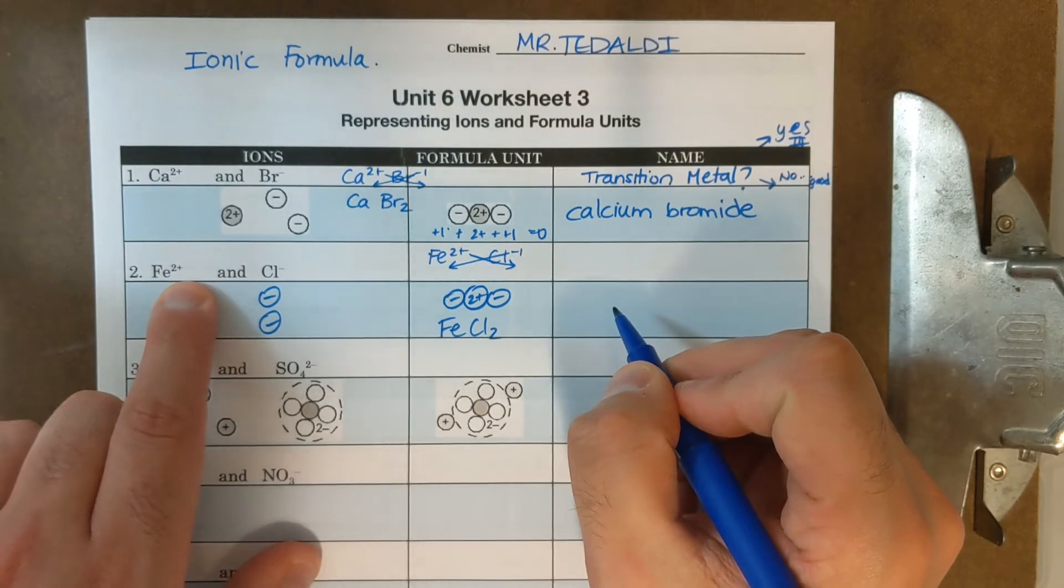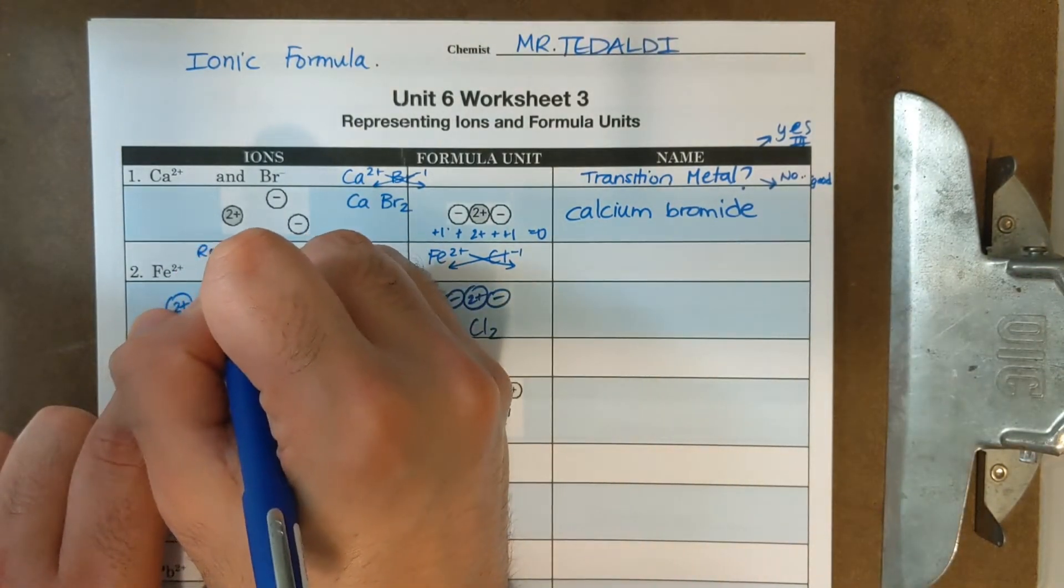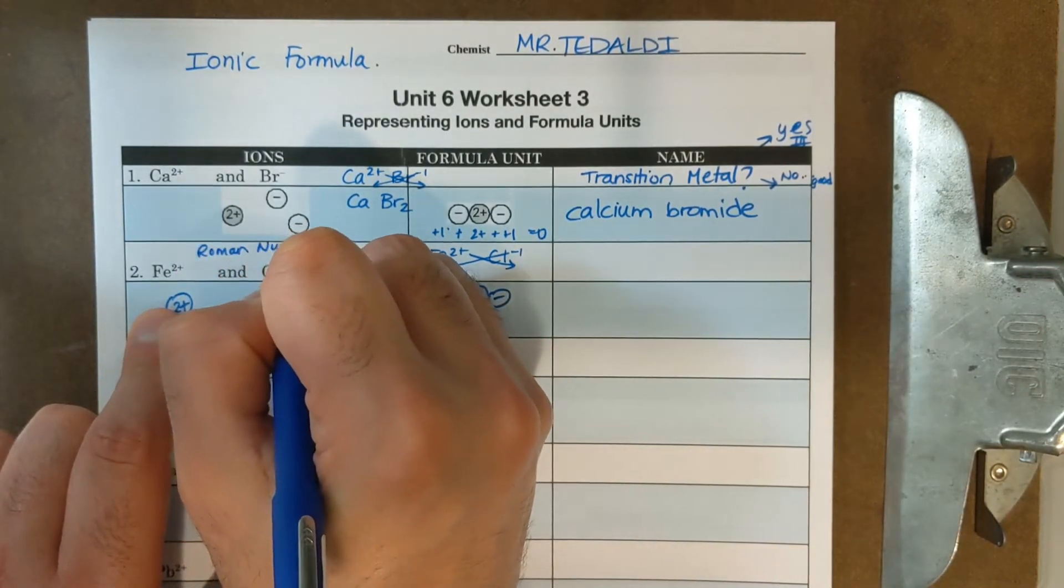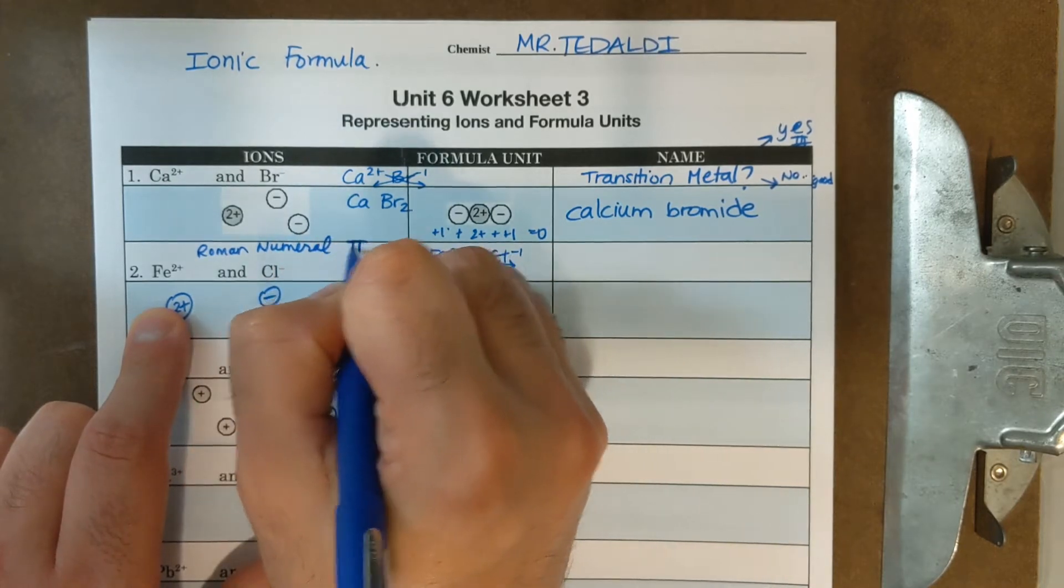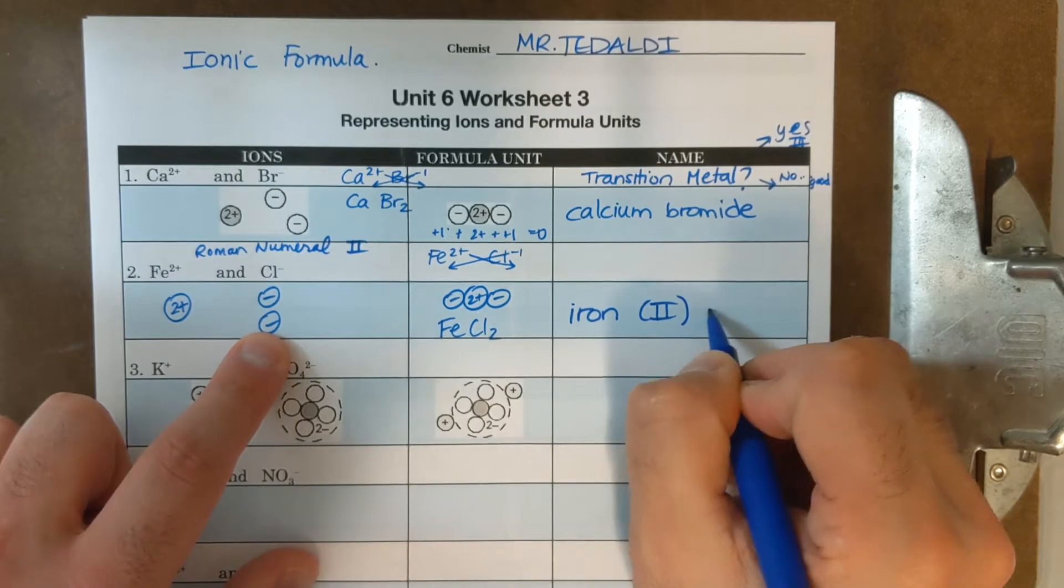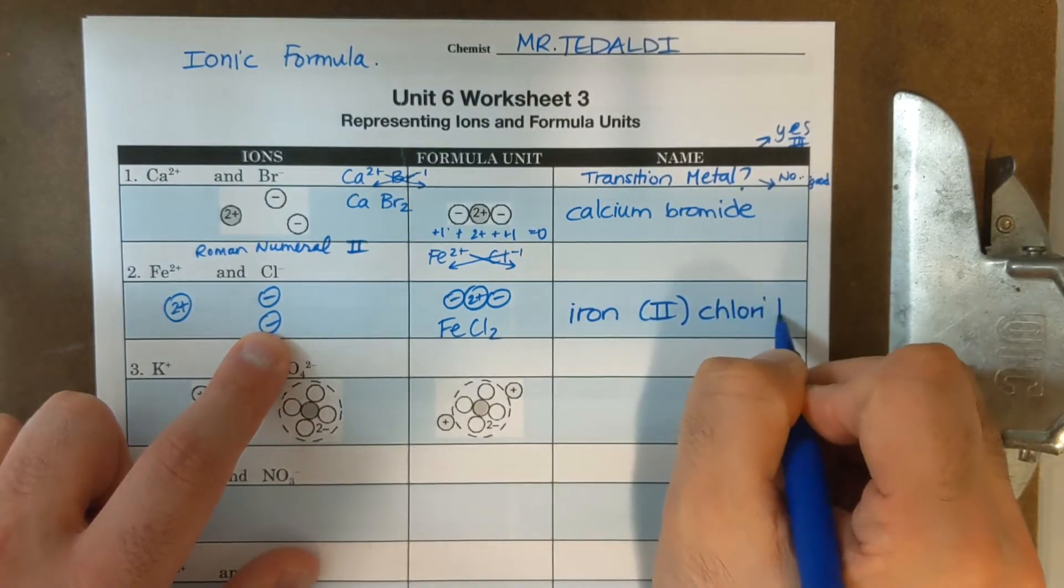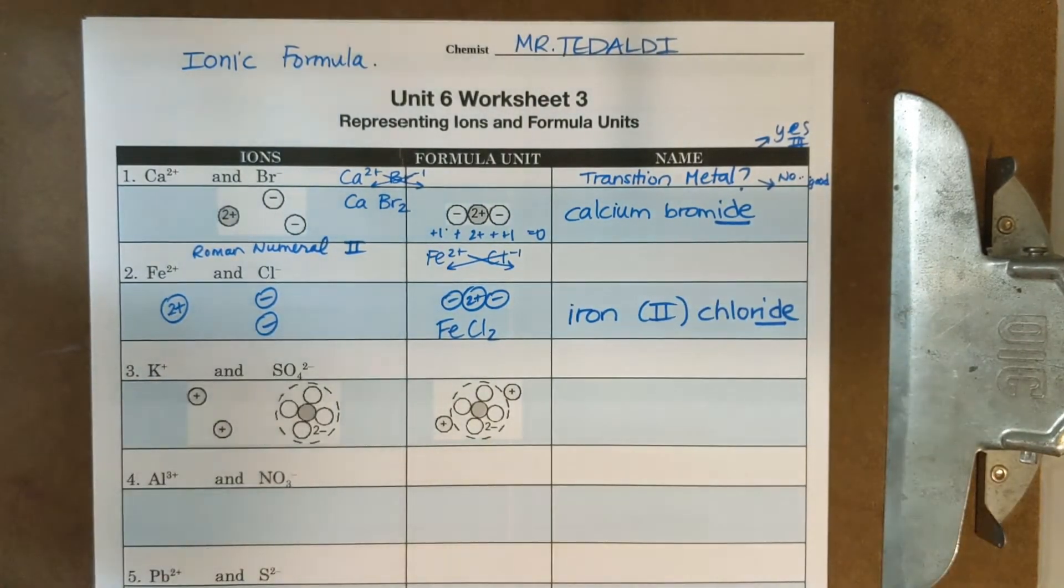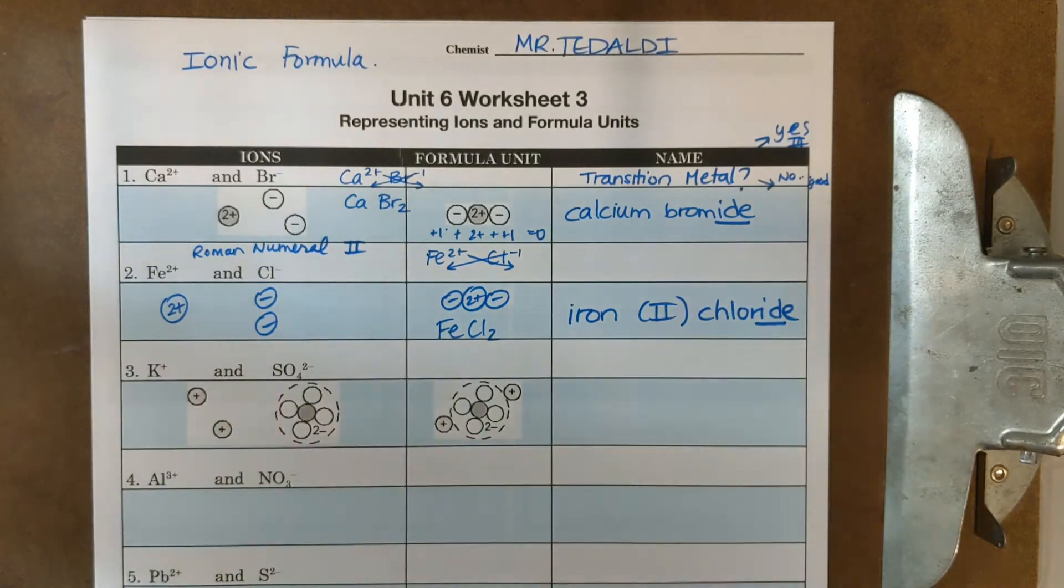And the charge is two plus, so I'm going to need Roman numeral two. So this is going to be iron, Roman numeral two, chloride. And don't forget the way that we name, the second element gets an IDE ending, except in number three, which we have a polyatomic ion.